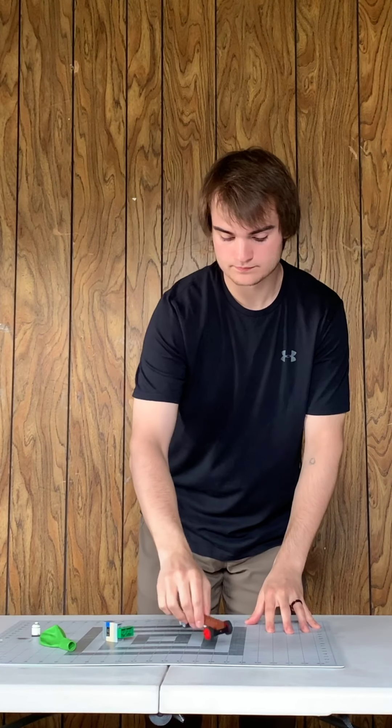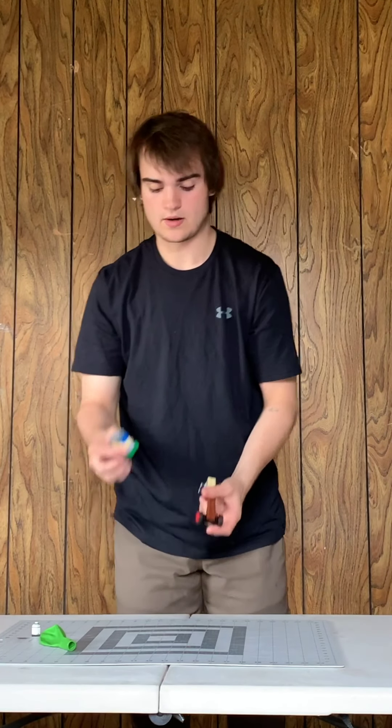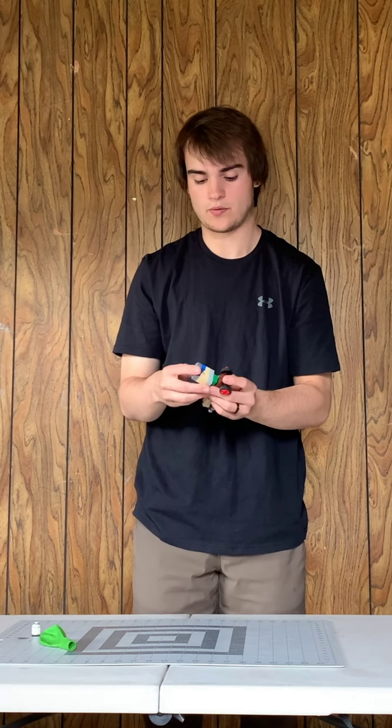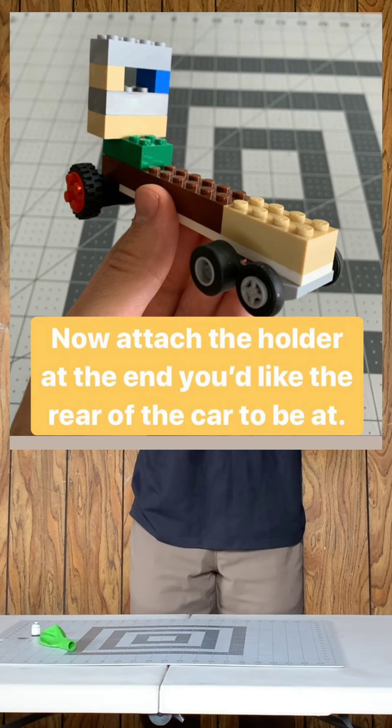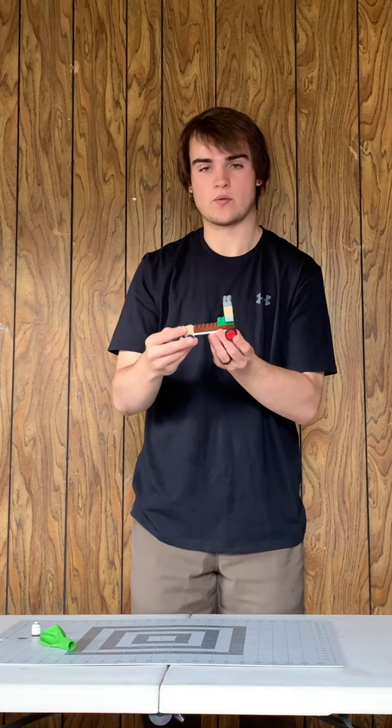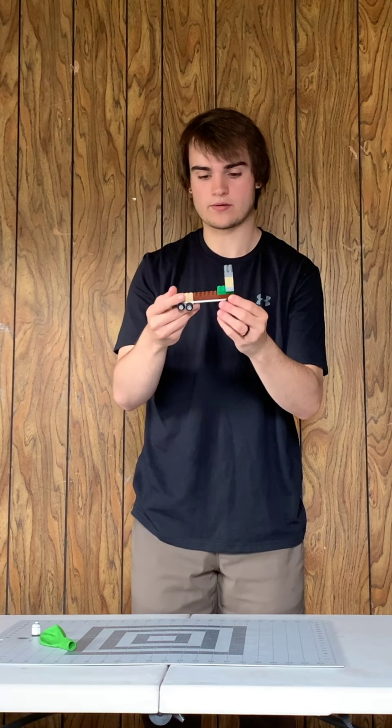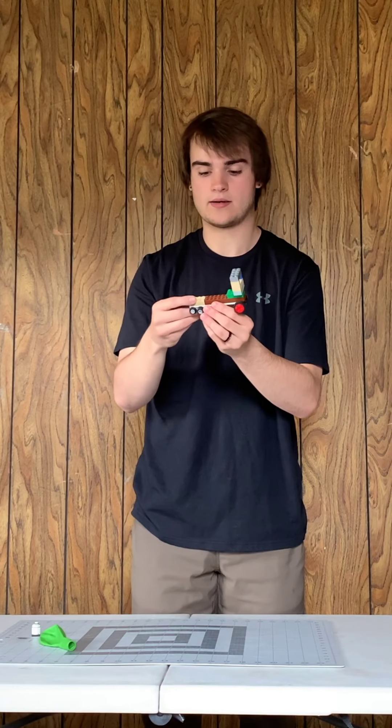Okay, so now we're going to go ahead and connect the balloon holder. That's pretty simple, you're just going to connect it at the end of the body that you want to be the rear. So for me I want the larger wheels to be the rear, so it's kind of higher in the back end and lower in the front end.